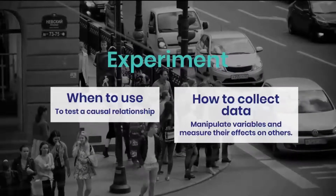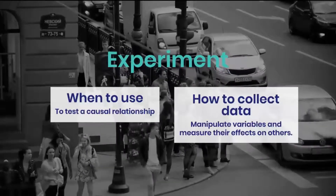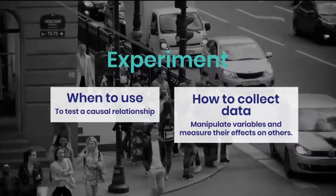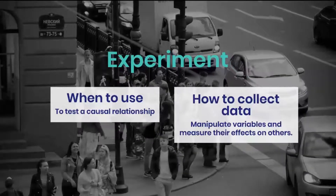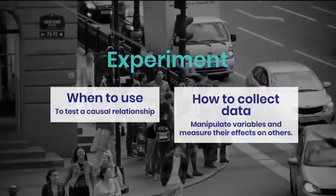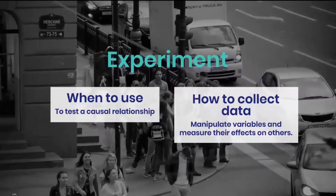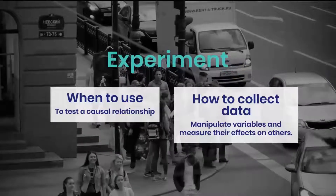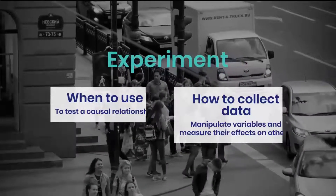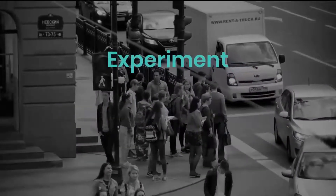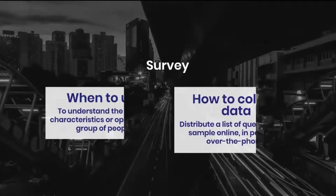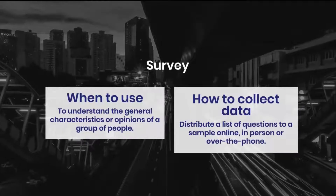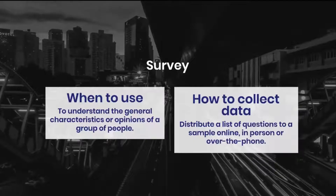Data collection methods: 1. Experiments — to test a causal relationship, manipulate variables and measure their effects on others. 2. Survey — when to use: to understand the general characteristics or opinions of a group of people. Distribute a list of questions to a sample online, in person or over the phone.